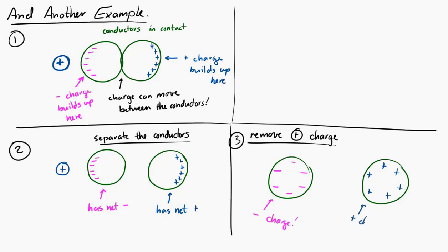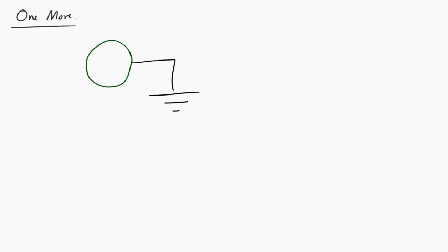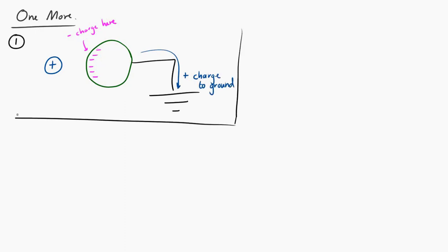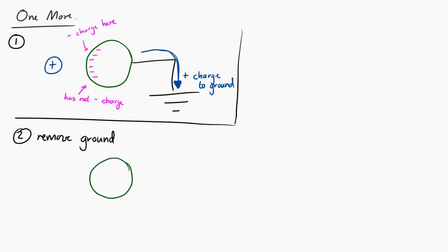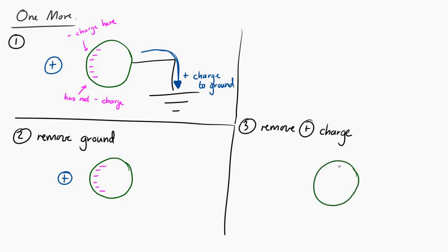Lastly, let's bring a little positive charge near a grounded conductor. Negative charge develops on the left side of the conductor because it's attracted to the positive charge, and the positive charge moves to ground, so the conductor has a net negative charge. If we then remove the grounding and then remove the positive charge, there's still a net negative charge left on that conductor.